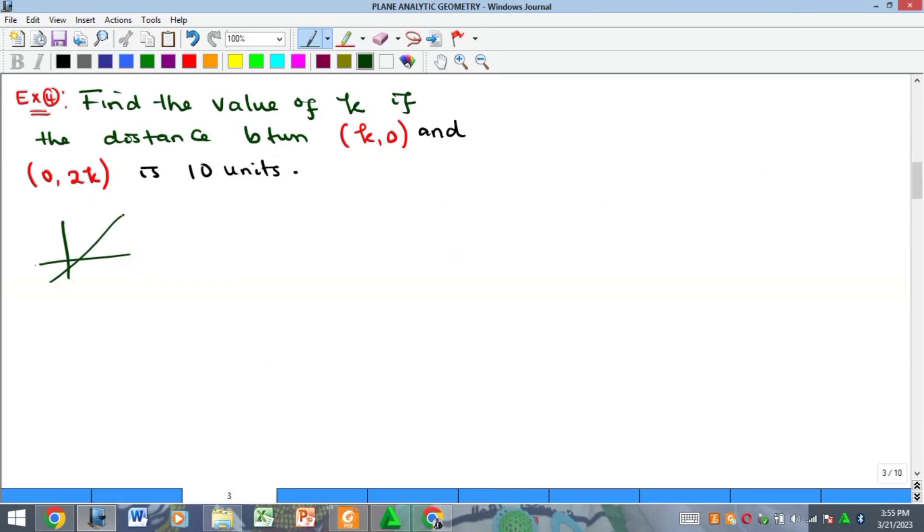Of course, you recall that we said if we have a line on a Cartesian plane and then you have two points, say A and B, and you want to find the distance between A and B, your AB is simply equal to the square root of—of course your B is always x2 comma y2, that's the coordinates, while your A is x1 comma y1.